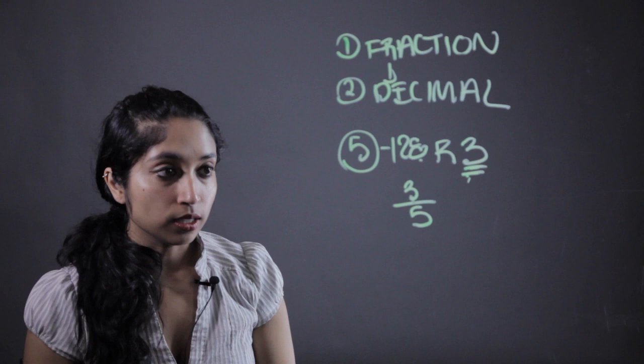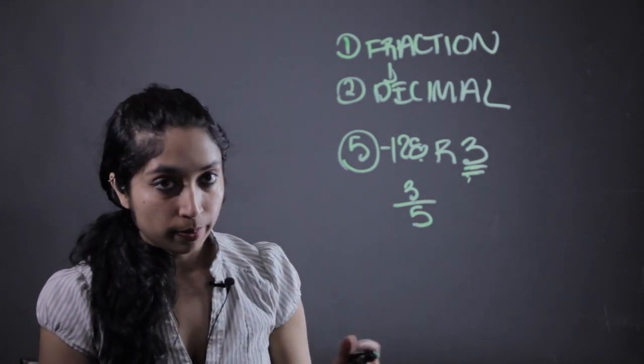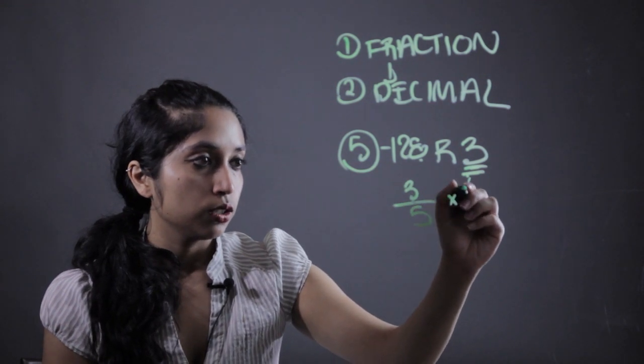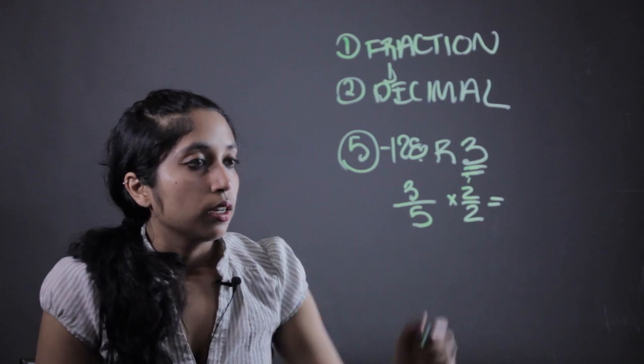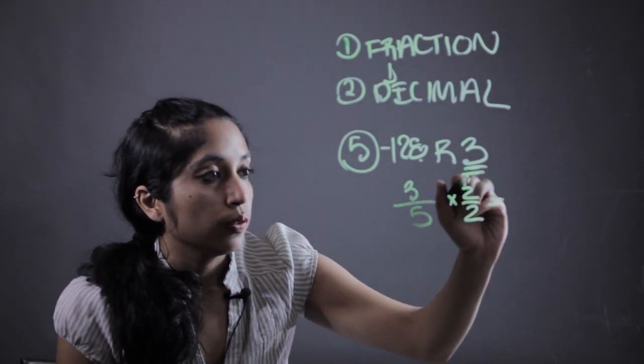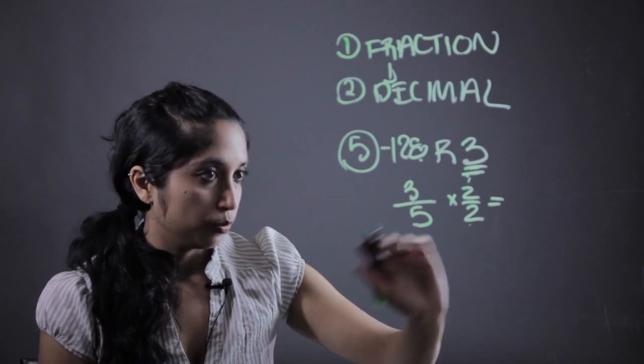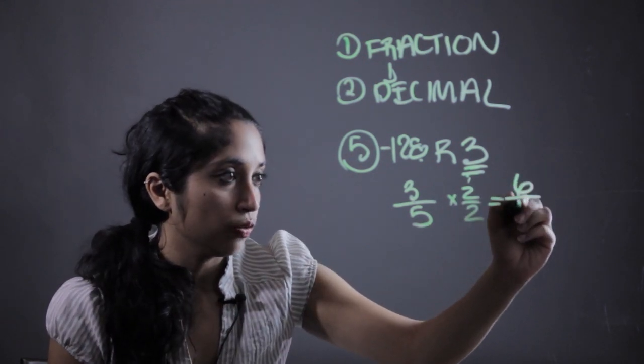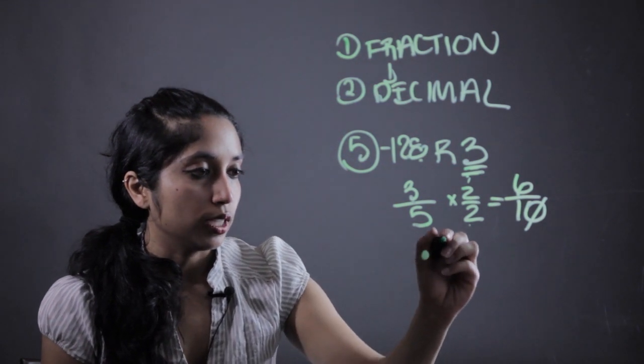Now to turn it into a decimal, you can either just type it into a calculator or we know decimals are based on tens. Turn this into some notion of 10 by multiplying it by 2 over 2. And of course, 2 over 2 is another way of writing 1, so it won't change the actual value of the fraction. 6 tenths, which can be written as 0.6.